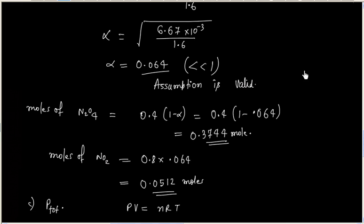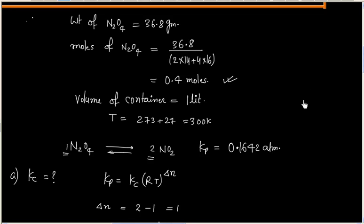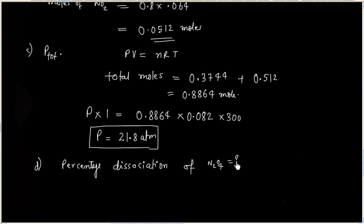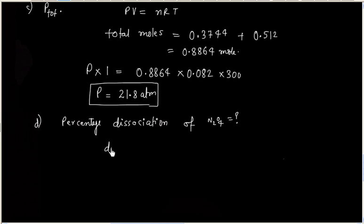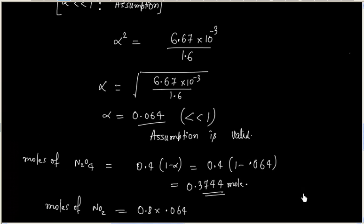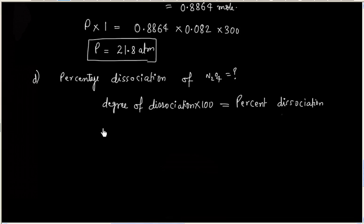Part D of the question asks us to calculate the percentage dissociation of N2O4. This is straightforward because we have already calculated the degree of dissociation alpha as 0.064. Percentage dissociation equals alpha times 100, which equals 0.064 times 100, giving 6.4 percent. So percent dissociation is 6.4 percent.